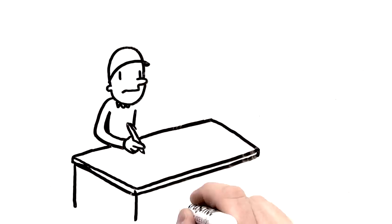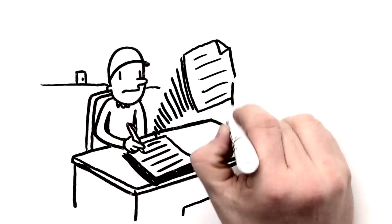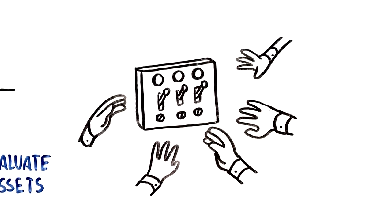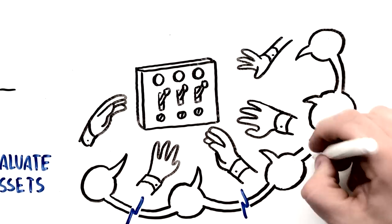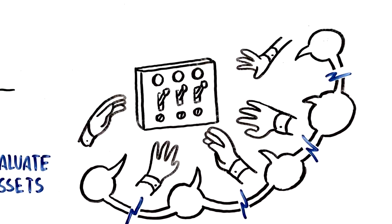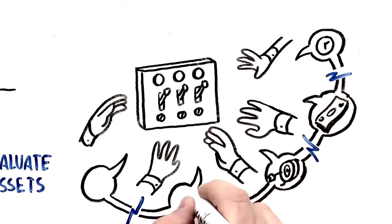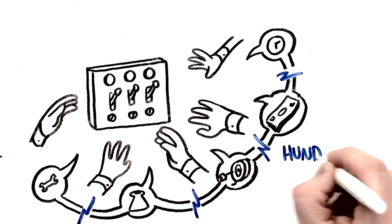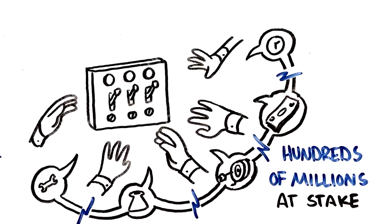Operators are often left on their own to evaluate and assess multiple data sources. Many variables and people are involved in this process with very little communication between them. As a result, the components to driving margin improvement do not always come together. This can have major consequences with potentially hundreds of millions of dollars at stake.